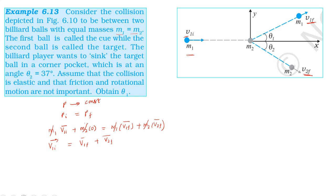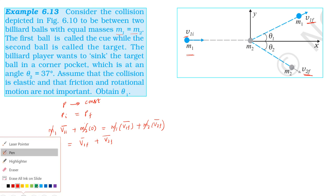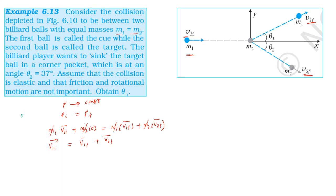The vector equation gives: initial velocity squared equals a squared. This means the initial velocity squared equals the final velocity vector combination. The initial velocity is the first part, and the final velocities are vectors representing the final states of both particles.